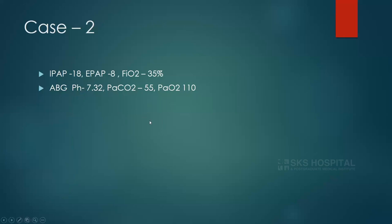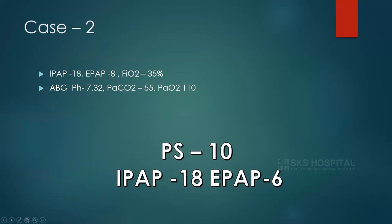For the next ABG adjustment: pressure support is now 10 (IPAP 18 minus EPAP 8), FiO2 at 30%. To further increase pressure support, decrease EPAP from 8 to 6, making pressure support 12. FiO2 remains at 30%. If saturation rises above 92%, further reduce FiO2 — even to room air at 21%. After two more hours ABG: pH 7.4, PaCO2 40 — ideal setting achieved. Serial ABGs with monitoring allow appropriate titration of BiPAP settings.